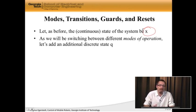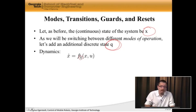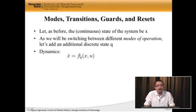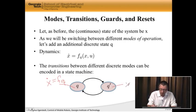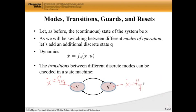Then we're going to add a discrete state that I'm going to call q, and q is going to tell me which different continuous mode I am in. My dynamics now can be encoded not as x-dot is f of x,u, but x-dot is f sub q of x,u, where this q tells me which mode am I actually in.